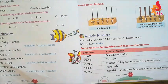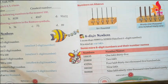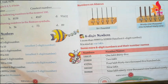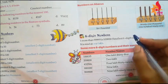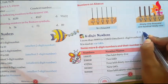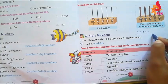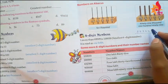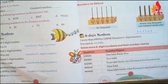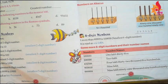One lakh is 1,00,000. Then the main thing is: what is the biggest five-digit number? If the biggest number is five digits, six digits, or seven digits, then always the digit nine is repeated. 99,999 is the biggest five-digit number, and 9,99,999 is the biggest six-digit number.